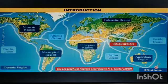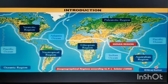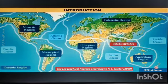Dr. P.L.S. Sclater was the first to map out zoogeographical regions based on the distribution of terrestrial vertebrates, especially the mammals.